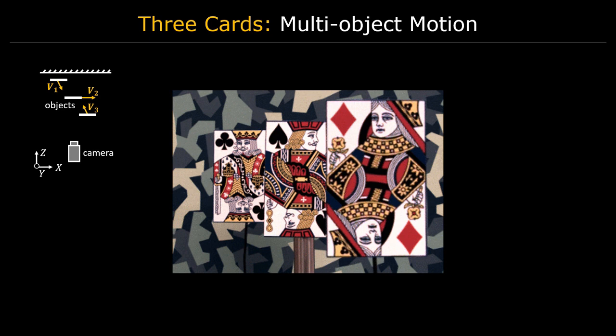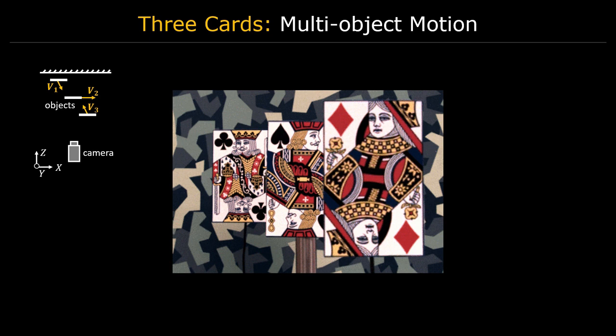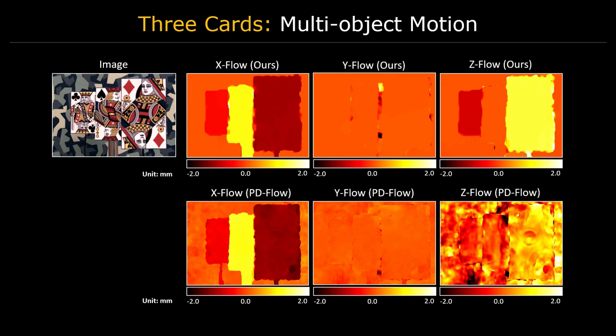This scene has multiple independently moving cards with overlapping boundaries. Here we compare our method with another existing scene flow method that computes Z motion as the change in estimated depth. Our method again estimates the Z motion more accurately.